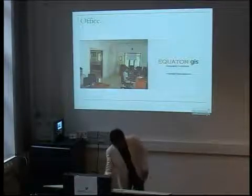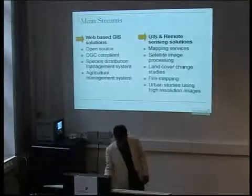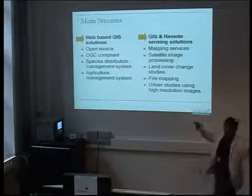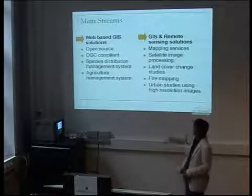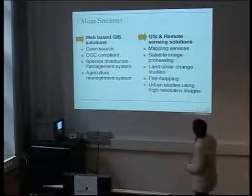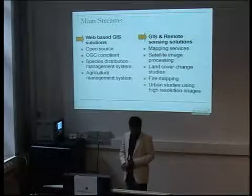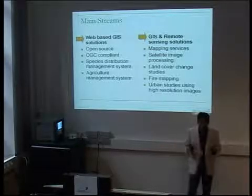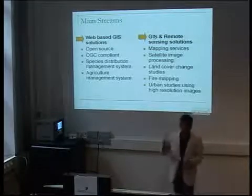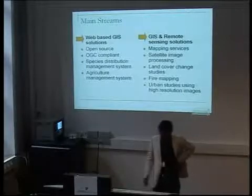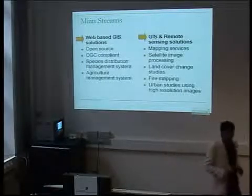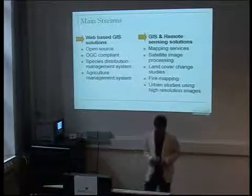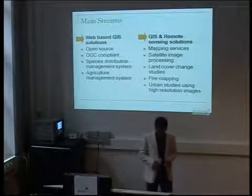This is our small office in Kochi, Kerala. The main streams we are focused on are divided into two areas: web-based GIS solutions and GIS and remote sensing solutions. In web-based GIS, we concentrate on open source tools to develop applications according to client requirements — and I can show you one application we developed using these tools. It is OGC compliant, which is becoming a hot term even in India. We have developed two management systems: a Species Distribution Management System and an Agriculture Management System.